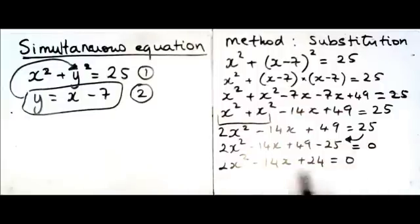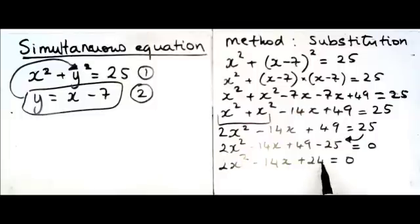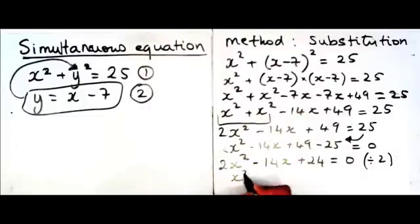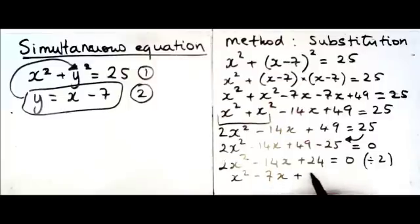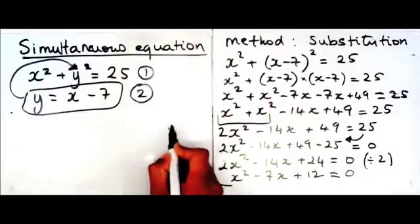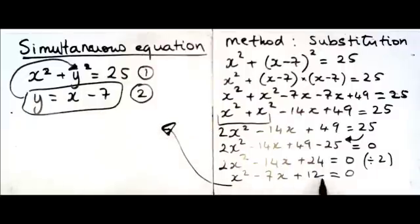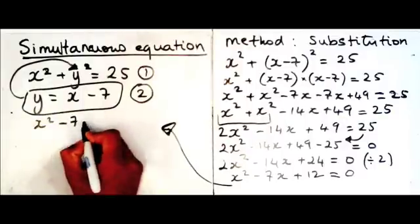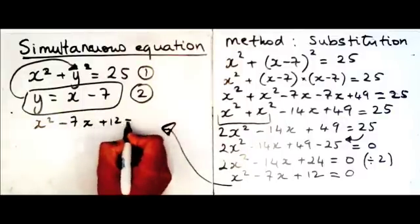When you've simplified your expression, ask yourself whether you can divide by any number. Looking at 2, minus 14, and 24, you can divide everything by 2. Dividing everything by 2 gives x squared minus 7x plus 12 equals 0. Now you need to factorize this expression to solve for x.